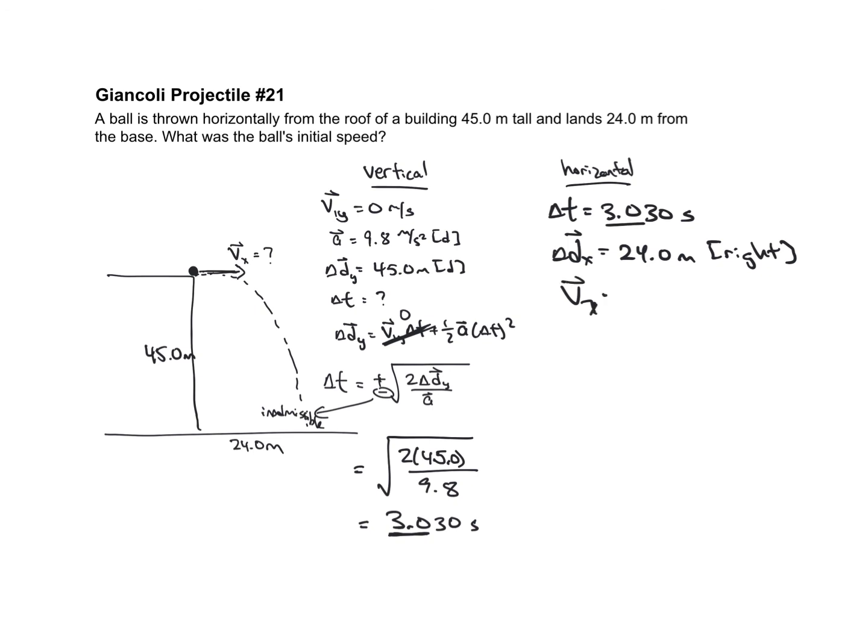The velocity is just going to be displacement divided by time. So 24.0 divided by 3.030, should be about 8.